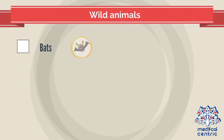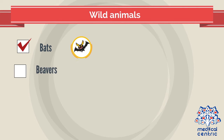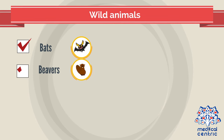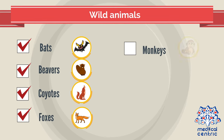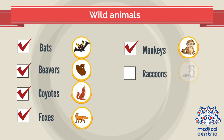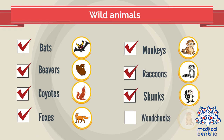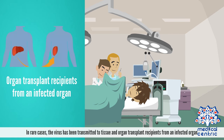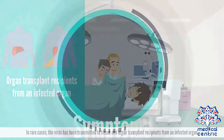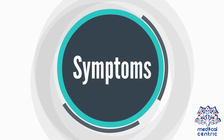Wild animals such as bats, beavers, coyotes, foxes, monkeys, raccoons, skunks, and woodchucks can also transmit rabies. In rare cases, the virus has been transmitted to tissue and organ transplant recipients from an infected organ.